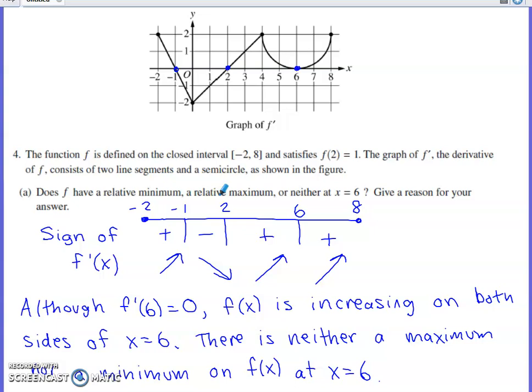So what values does f prime have the opportunity to change at? Well, f prime would have to first be 0, which happens 3 times, or undefined, which happens not at all on this graph for this interval. So the 3 times when f prime could change would be the x of negative 1, the x of 2, and the x of 6.